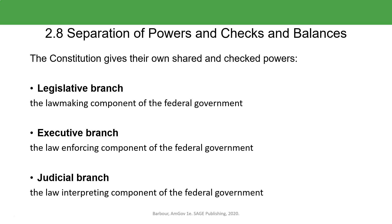Our three branches of government — the legislative branch, the executive branch, which is the law-enforcing branch, and the judicial branch, which interprets the laws — each one was supposed to individually and separately have their own control, so no one branch would have more power than the other. They would all share power, and they would have checks and balances to make sure that one could not usurp the other.